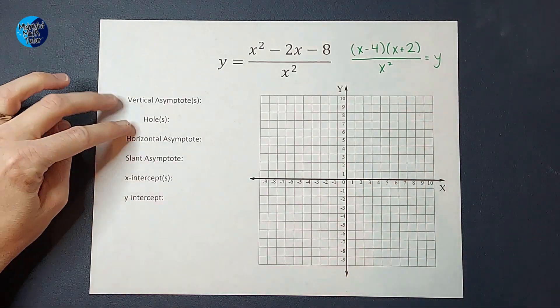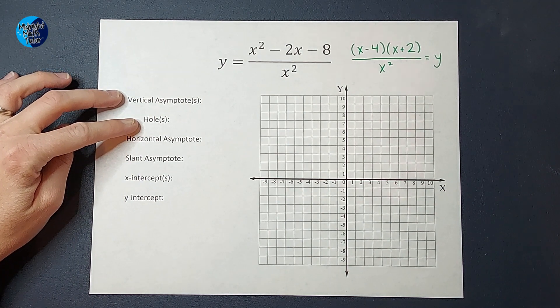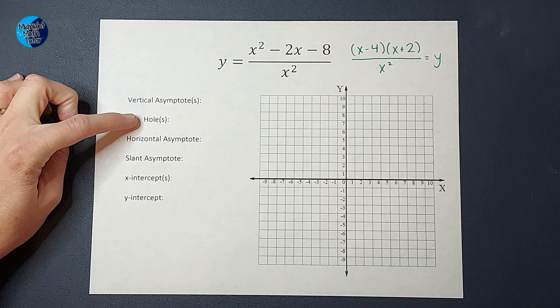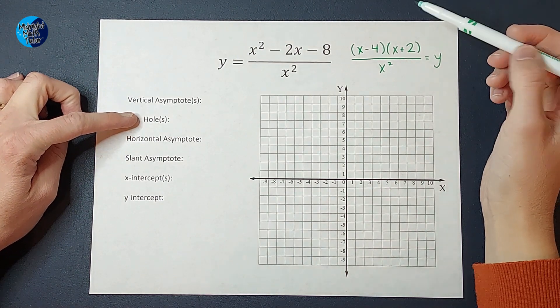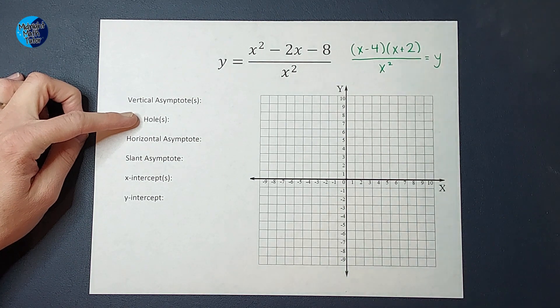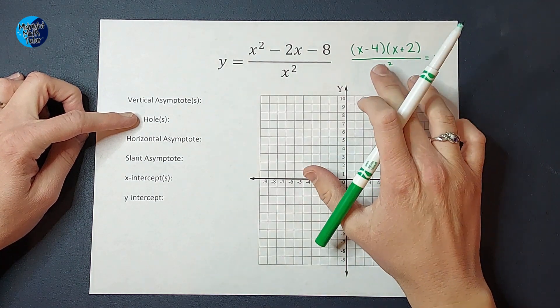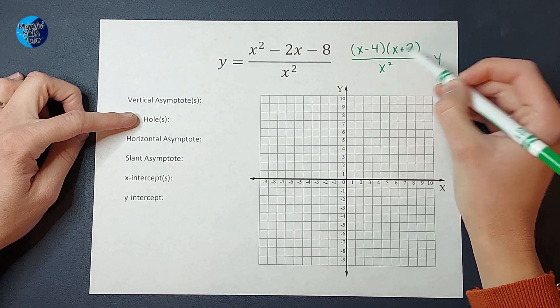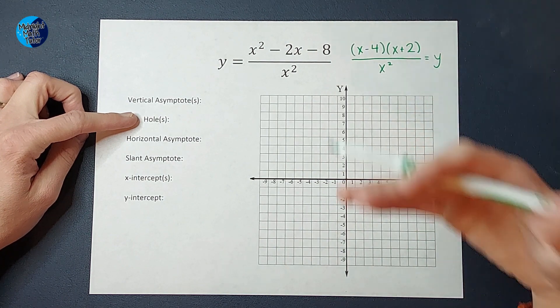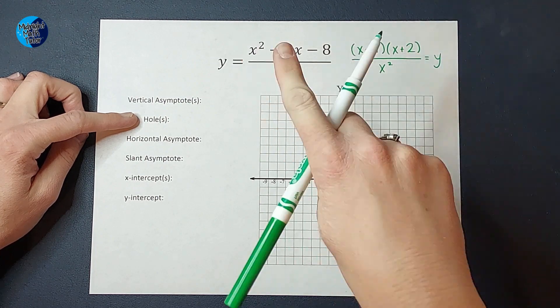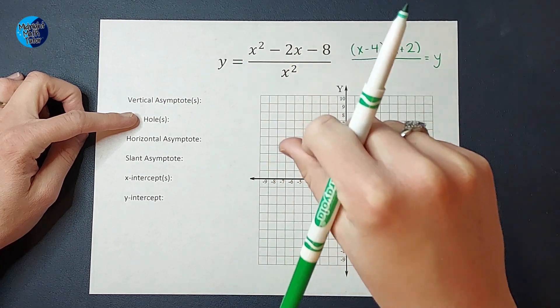Next thing I'm going to do is look for vertical asymptotes and holes. They kind of go together. So there is a hole in my graph if, pretend that down here instead of an x squared, pretend it was an x plus two down here. So then that and this guy would cancel. If that happens, if you have something cancel on top and bottom, that is when you have a hole in your graph.